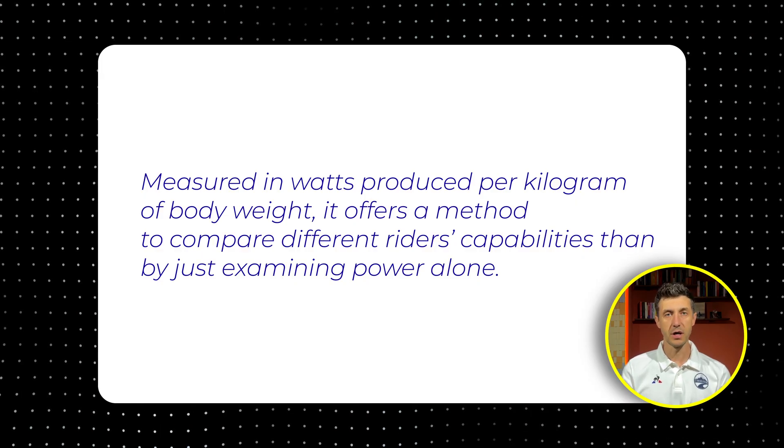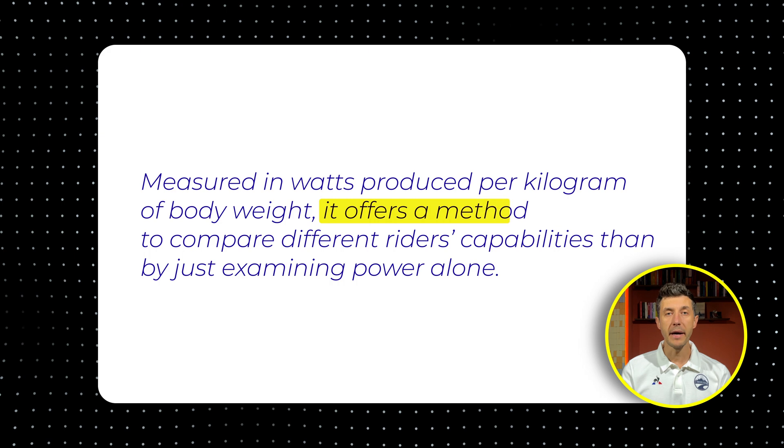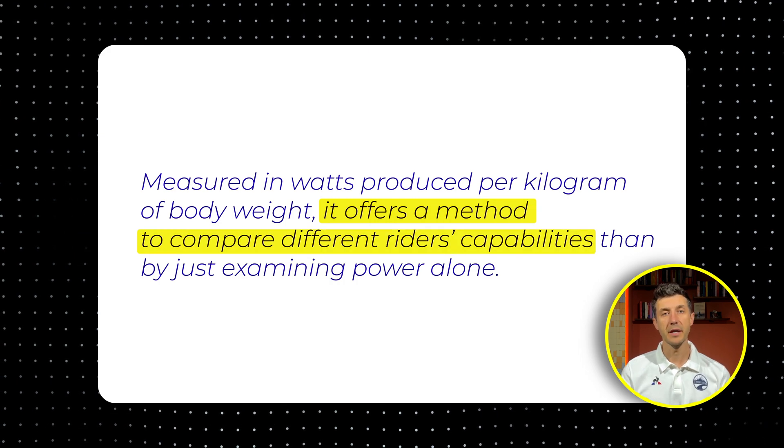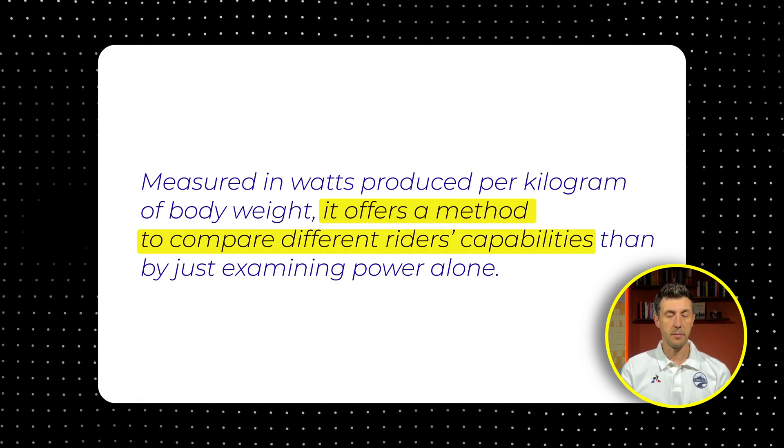Let's start by understanding what is power to weight. In short, the power to weight ratio refers to the correlation between your cycling power and body weight, measuring watts produced per kilogram of body weight. It offers a method to compare different riders' capabilities rather than by just examining power alone. While larger riders typically have more power than smaller riders in absolute terms, lighter riders require less energy to move themselves forward, particularly uphill.